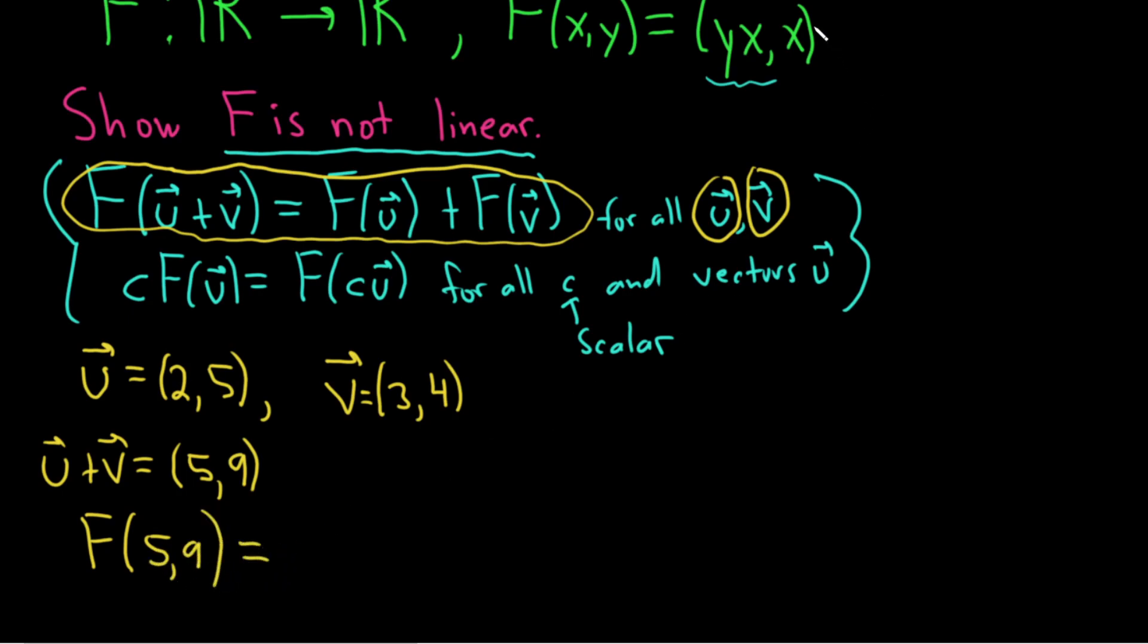And here's the formula for F up here. So this is our x here and this is our y, so you have to be careful. So it's y times x, so that would be 9 times 5. Comma, and then x is 5. So 5. Again, it's yx, x. So yx, 9 times 5, and then x. That would be 45, comma 5. Because 9 times 5 is 45.